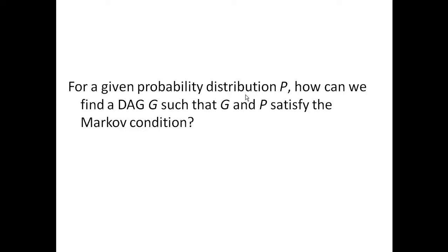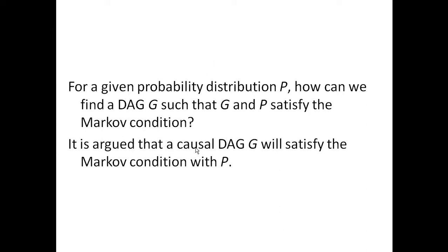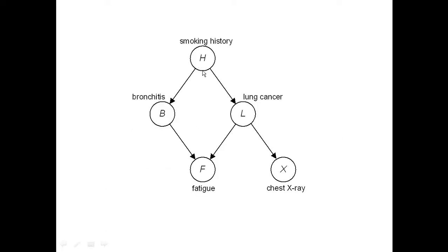For a given distribution, how can we find the DAG G such that G and P satisfy the Markov condition? In the case of wage, height, and gender, I looked at the data first — and you can in fact learn these distributions from data, which I'm going to talk about later on in the course. But another way to do it is that people often argue that a causal DAG will satisfy the Markov condition. So if you draw a causal DAG, you can assume that the assumptions for the Markov condition are satisfied. All you need to do then is to ascertain the conditional probability distributions, and you can be fairly confident that you will be representing the probability distribution correctly.